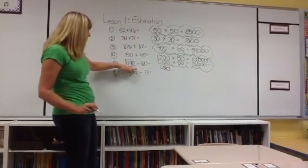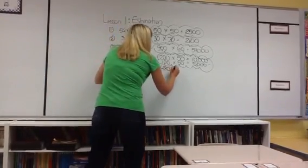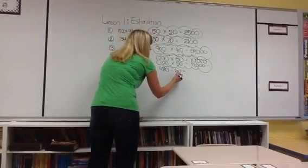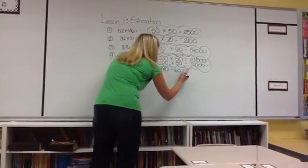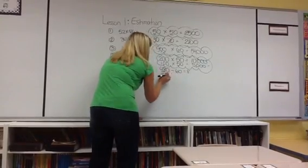And then I'm going to zero out the 2. So instead of 492, I get 480 divided by 60. And then I'm going to think multiplication. 6 times 8 is 48, so 8 times 60 is 480.